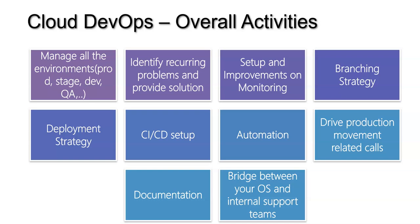The other important area is branching strategy. This is about how the code should flow from one place to another. For example, you can have a master branch, feature branches for different teams working on different features, a hotfix branch for emergency fixes, and a release branch. You can have multiple branches based on requirements and the size of the program. How the code repository and branches are managed needs to be defined under the branching strategy.